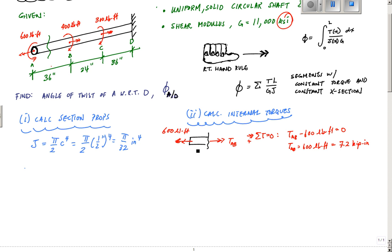Now for segment BC, I make a cut and have concentrated torques of 600 pound-feet and 400 pound-feet. For internal torque TBC, summing torques equal to zero: TBC minus 600 plus 400 equals zero, which gives TBC equals plus 200 pound-feet.